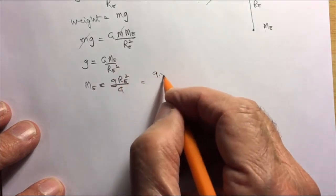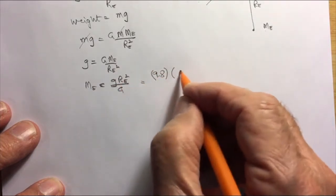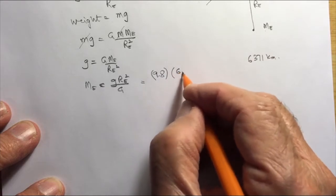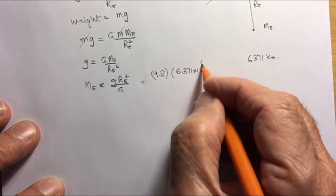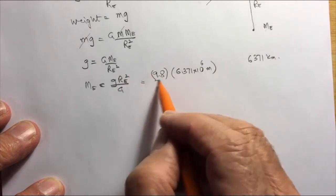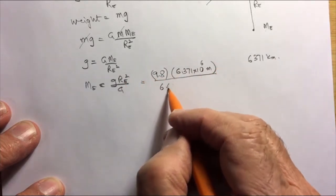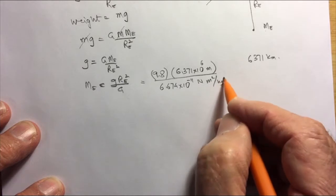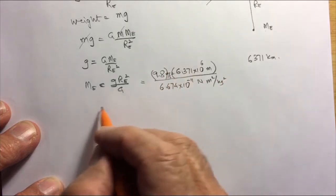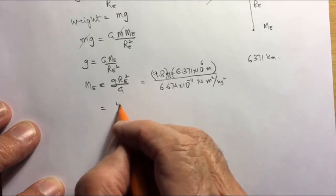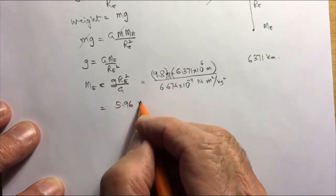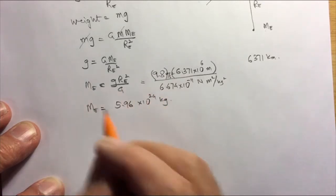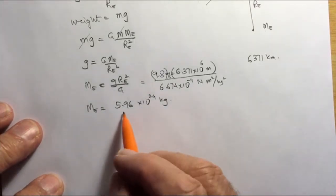Using g = 9.8 m/s², Rₑ = 6371 km = 6.371 × 10⁶ m, and G = 6.674 × 10⁻¹¹ N·m²/kg², the mass of the Earth works out to 5.96 × 10²⁴ kg, which closely matches the textbook value of 5.97 × 10²⁴ kg.